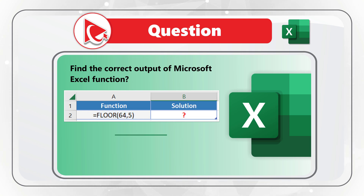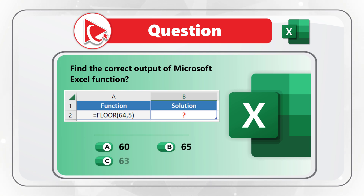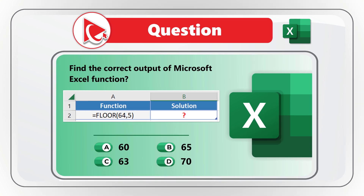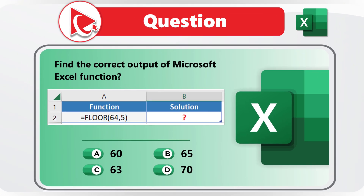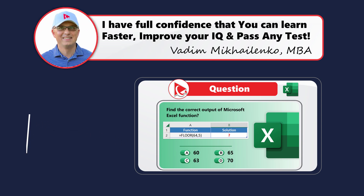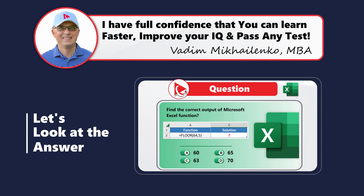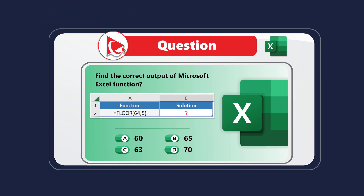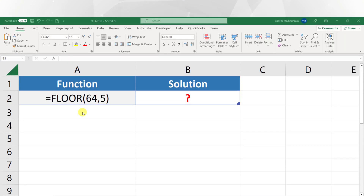You have four different choices: choice A — 60, choice B — 65, choice C — 63, and choice D — 70. Take a close look, refresh your memory, and see if you can select the right answer. I'm moving forward to share my version of the answer — if you have a better way to solve it, please post in comments. Let's jump to Microsoft Excel where we can solve this together.